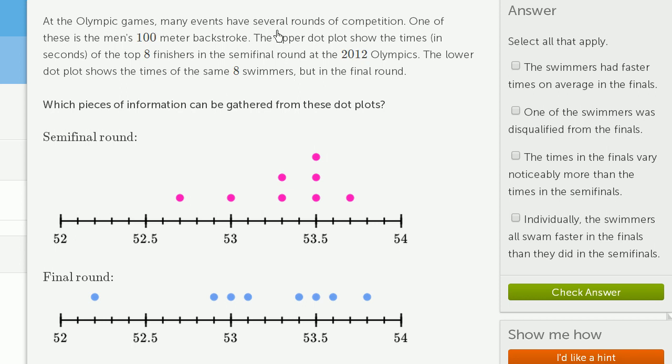At the Olympic Games, many events have several rounds of competition. One of these is the men's 100-meter backstroke. The upper dot plot shows the times in seconds of the top eight finishers in the semifinal round at the 2012 Olympics. The lower dot plot shows the times of the same eight swimmers, but in the final round.